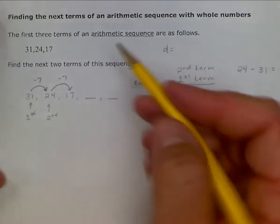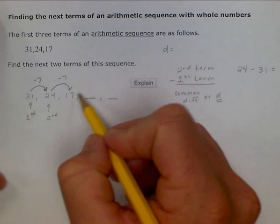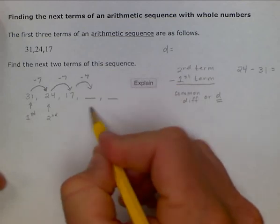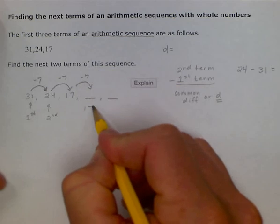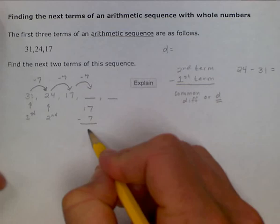So in order to find the next two terms, we would just continue with that pattern. 7 from 17, if we wanted to write it like this, subtracting a 7, or adding a negative 7, will give you 10.